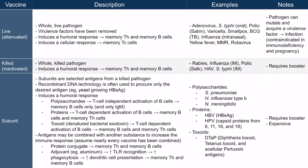Now let's discuss killed or inactivated vaccines. These include the whole pathogen just like live vaccines, but they're killed. These vaccines induce a humoral response, which means the patient will form memory T helper cells and memory B cells. However, they will not form a cellular response.